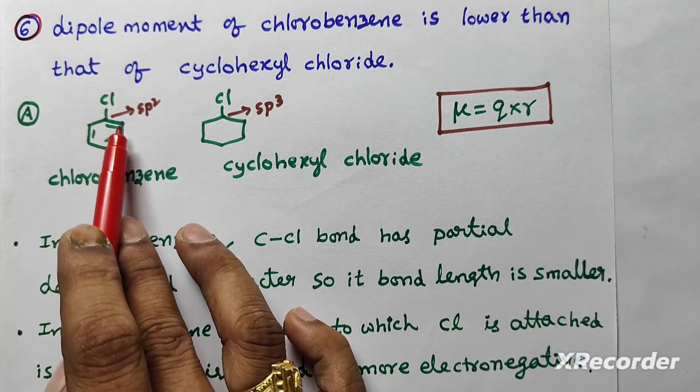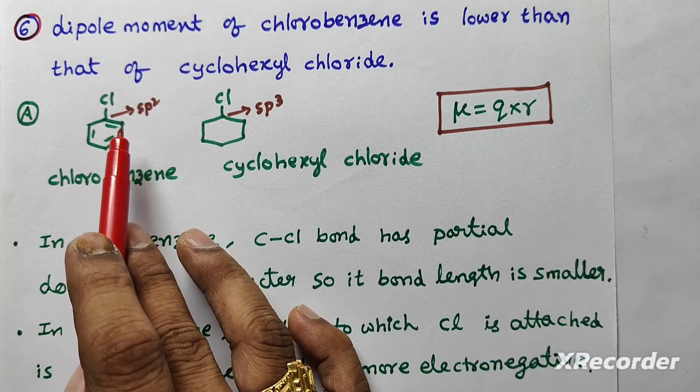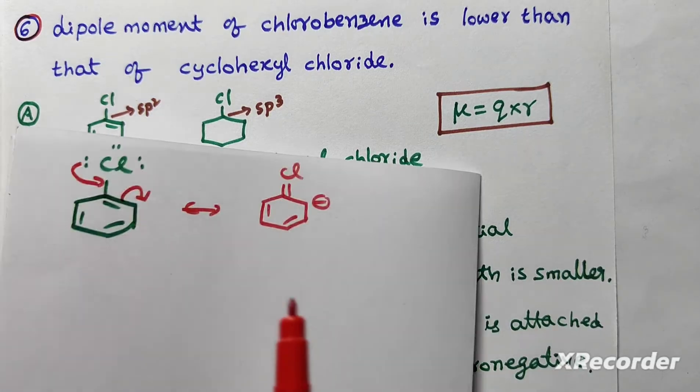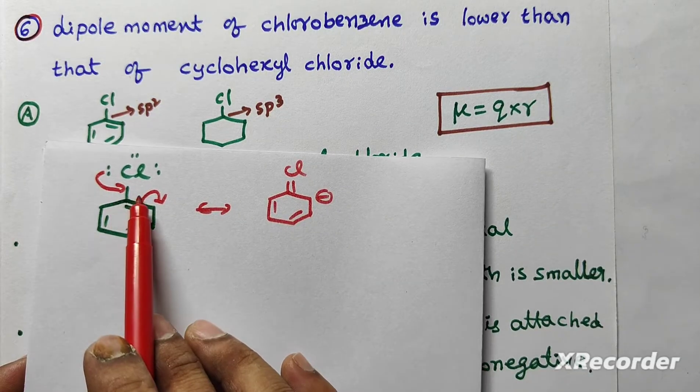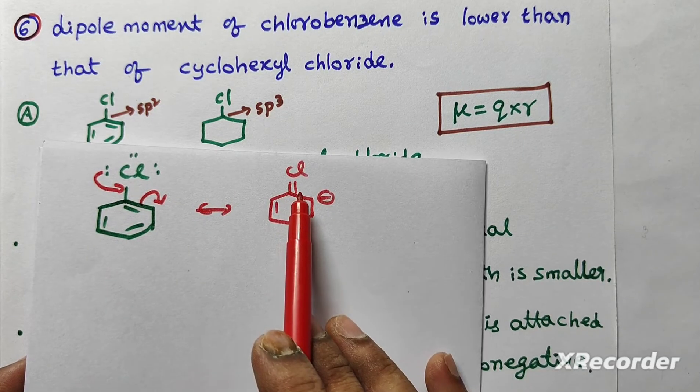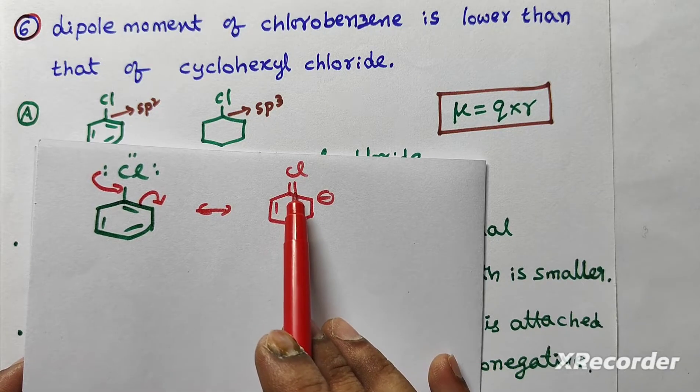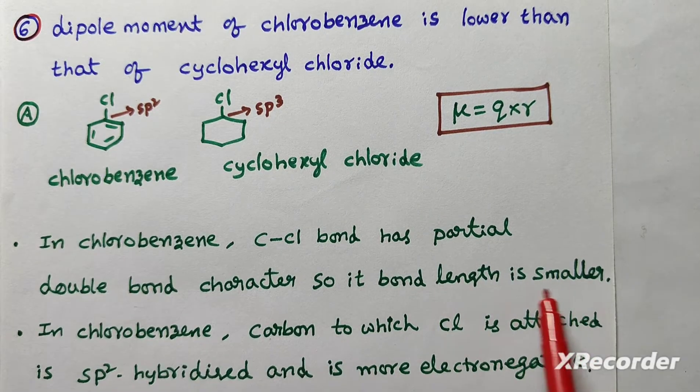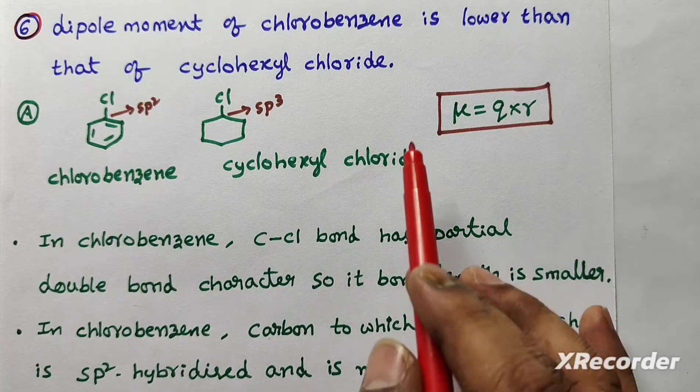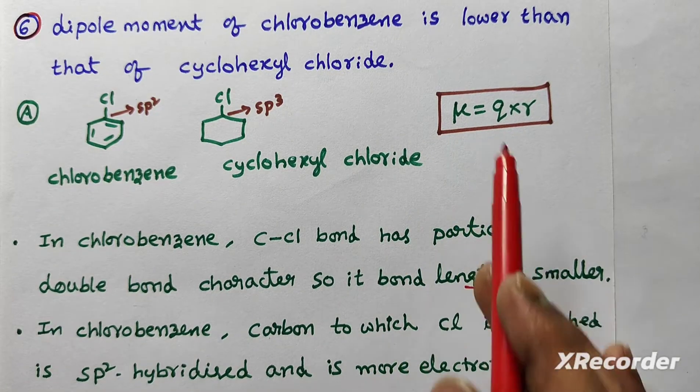In chlorobenzene, carbon-chlorine bond has partial double bond character due to resonance. Look at this. This lone pair is involved in the resonance. So it has partial double bond character. When it has partial double bond character, bond length is small. When bond length is small, mu also small. First reason.